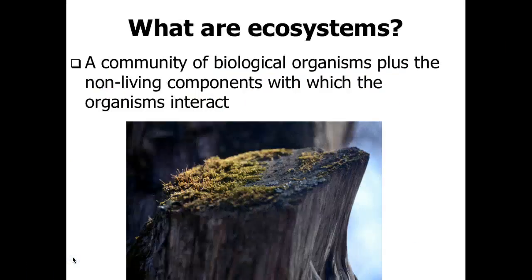Welcome to the first part of the slideshow on ecosystems. If you remember during the population ecology portion last week, you looked at the different components that make up an ecosystem, starting from the smallest unit, which was the organism or an individual. Individuals will form a group within their own species in the particular region where they're living, called a population.